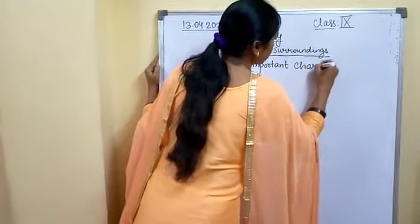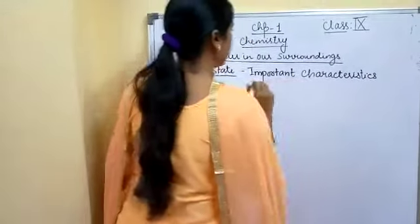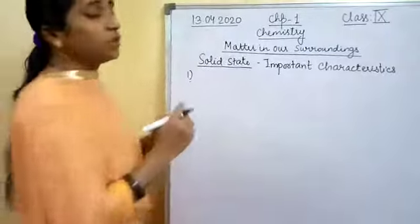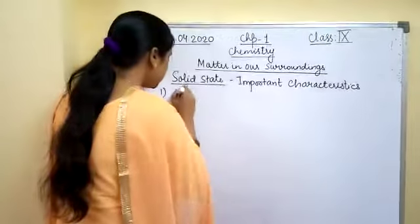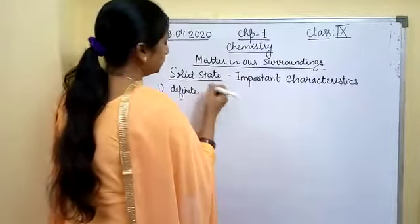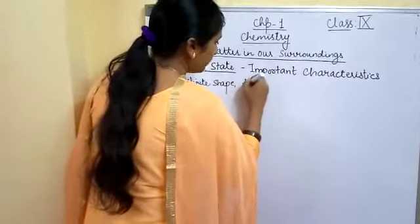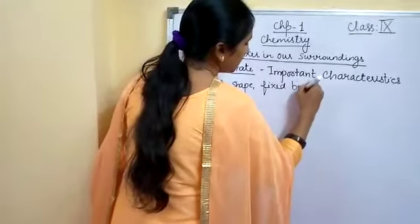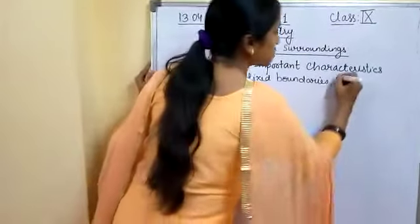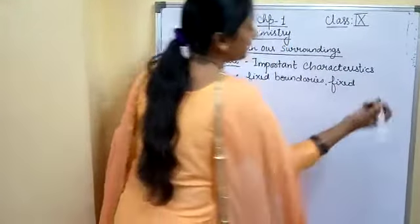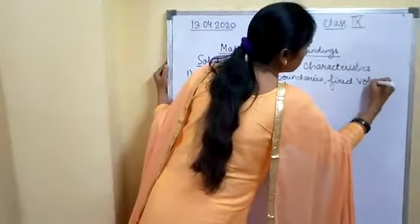So, the important characteristics of the solid state — first of all, solids have got a definite shape. They have got fixed boundaries, defined edges, and they have got fixed volume because their particles are closely packed. So they have a fixed volume.